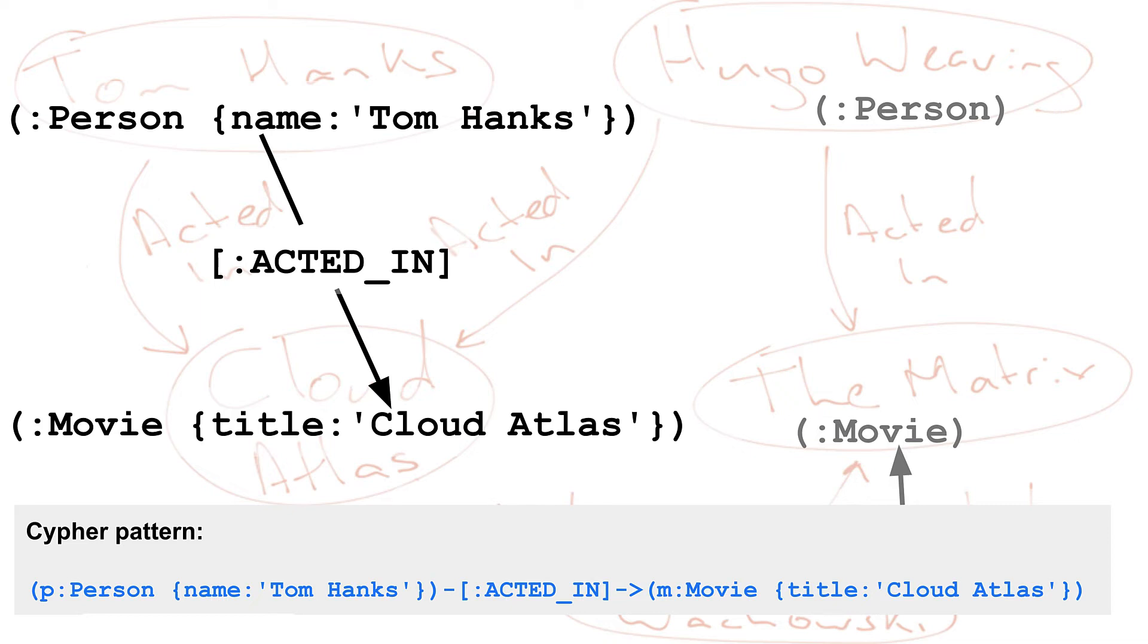Completing the Cypher code, we use the match clause to retrieve the data in the graph, and we use the return clause to return a person node, P, and a movie node, M.